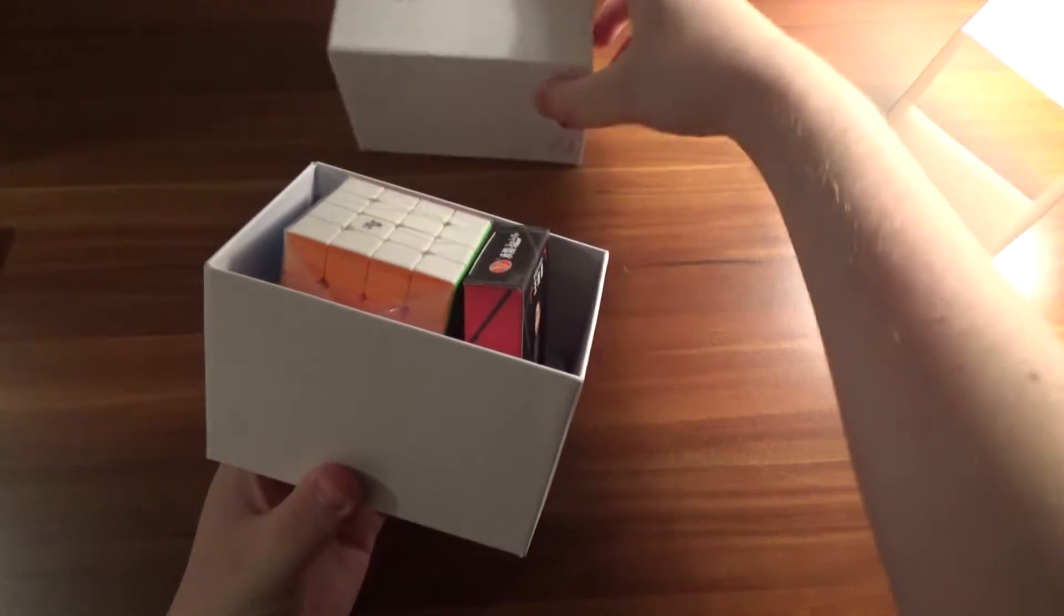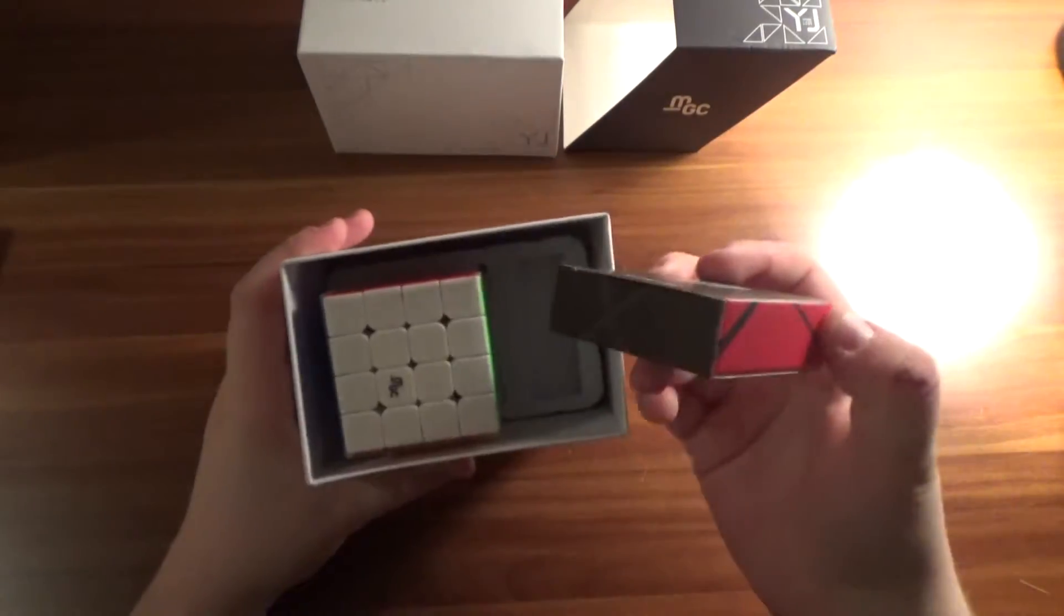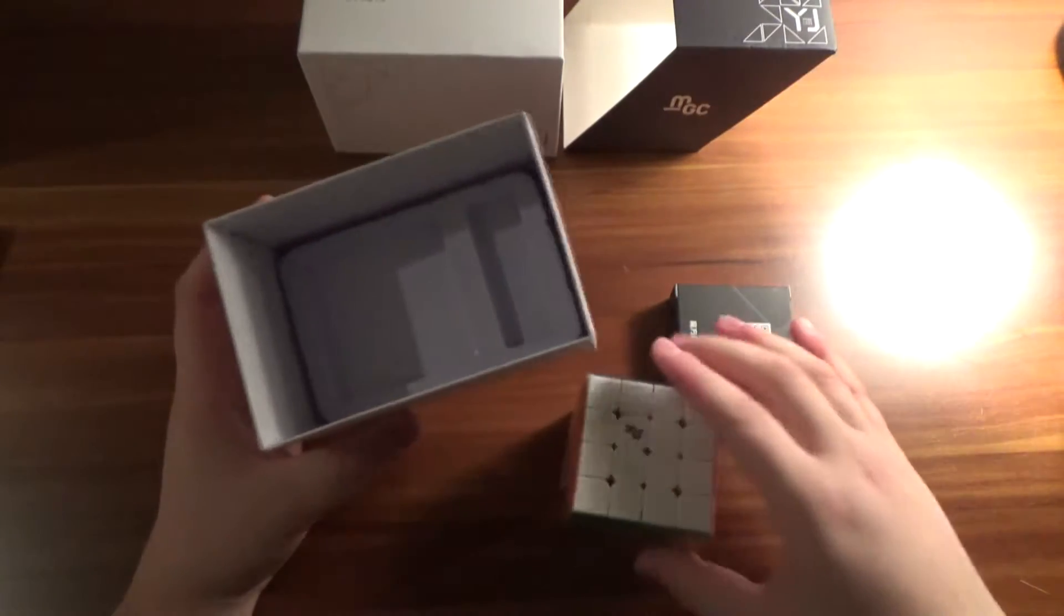Smooth. And then this is what's inside. The usual accessory box, and then the actual cube.